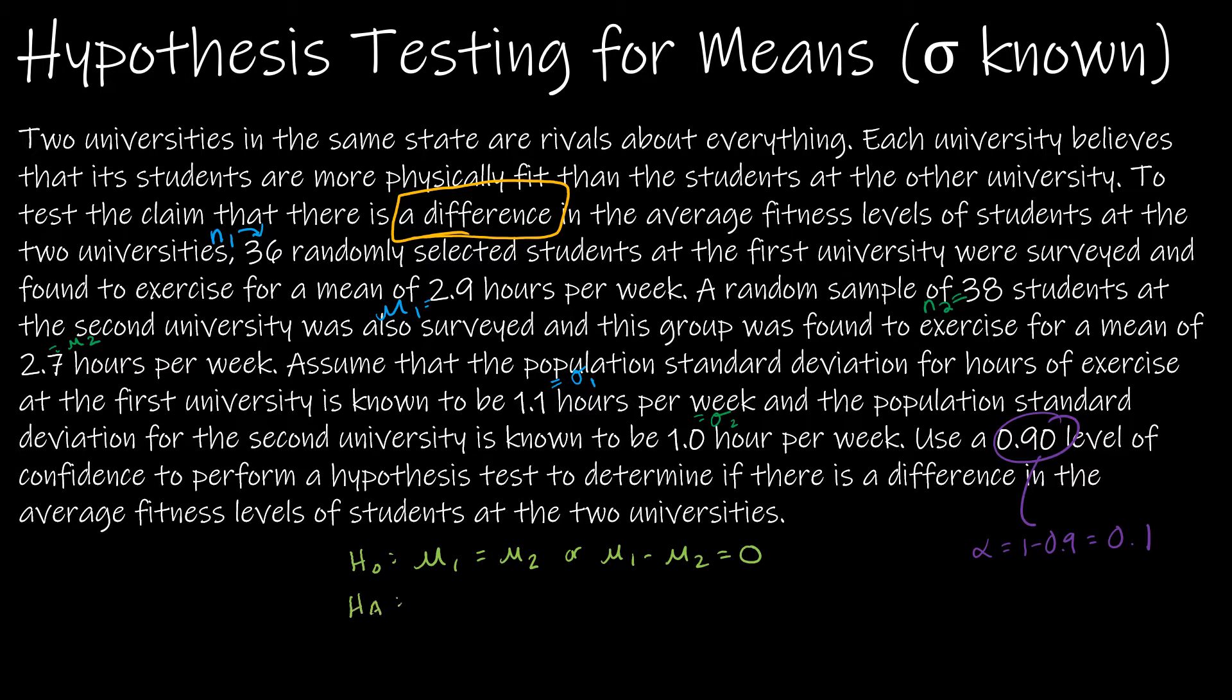The alternative says that there is a difference. So a difference just indicates that they're not equal. Either μ₁ is not equal to μ₂, or μ₁ minus μ₂ is not equal to 0. So the hypothesized difference is 0.